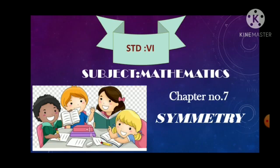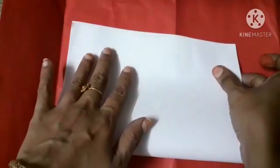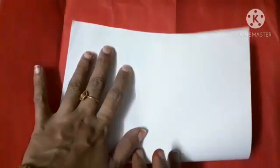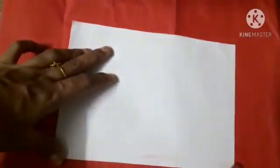Children, today we are going to start our Chapter Number 7. Let's understand symmetry through the activity given further. Activity 1. Children, take a paper and fold it half so that both the parts are equally divided.